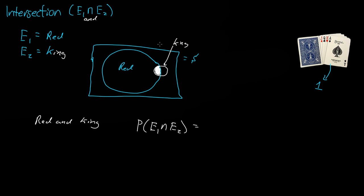The king of hearts plus the king of diamonds, divided by 52. So that's two outcomes out of 52, or simply 1 in 26. So that is the probability of getting the intersection of event one and event two.